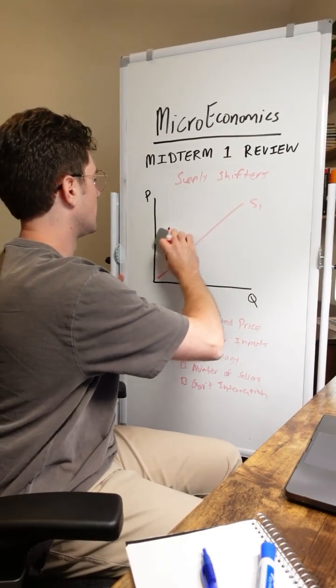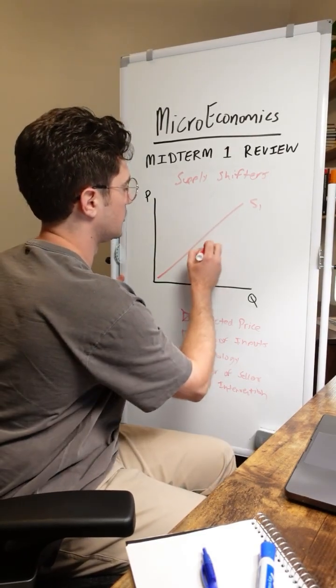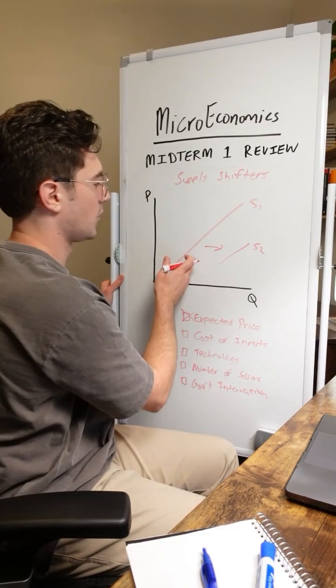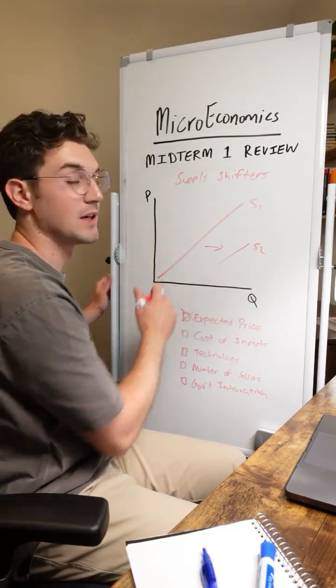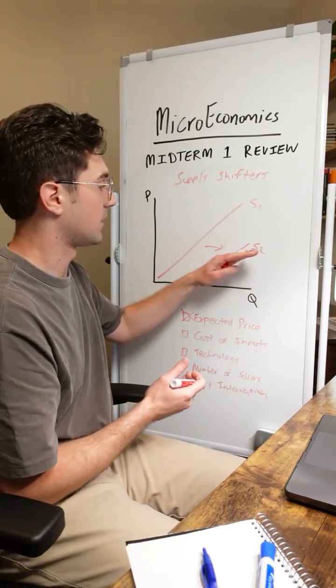On the flip side here, if the cost of your inputs decrease and it essentially becomes cheaper for you to produce the good, well then you're going to be able to supply more units to the market at the same price levels as before. So we'll shift supply to the right.